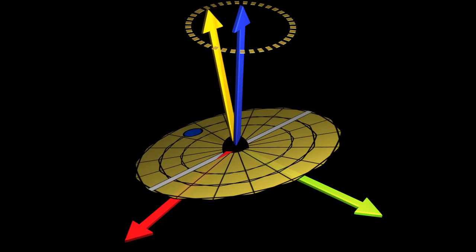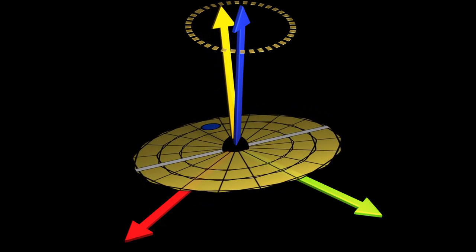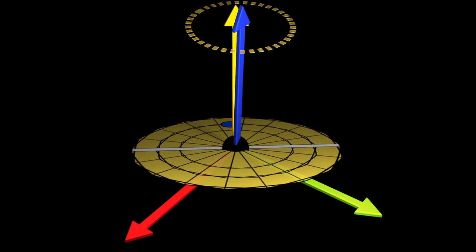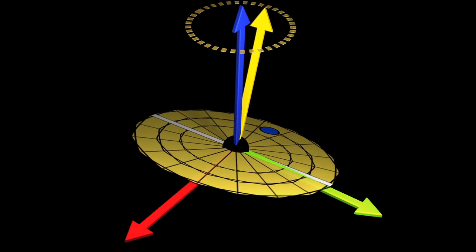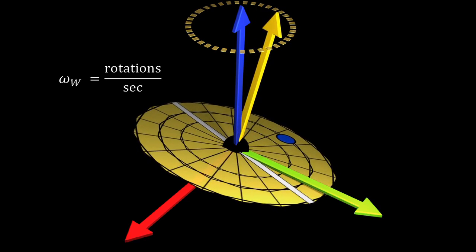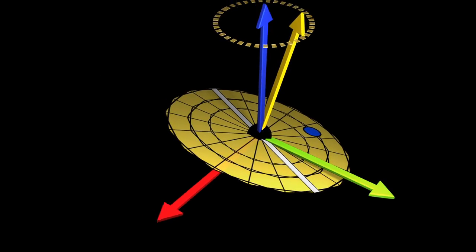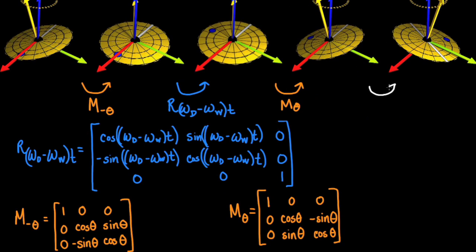Finally, we must describe the wobble created by the rotation of the tilt axis. The tilt axis is rotating clockwise about the positive z-axis with rotation rate omega w. So, at time t, it has rotated by omega w t degrees, which is what this matrix does.